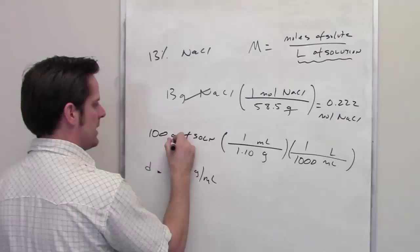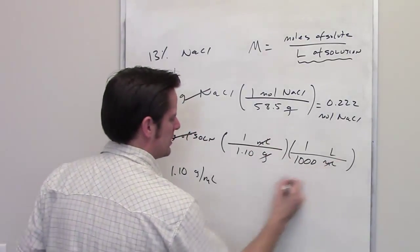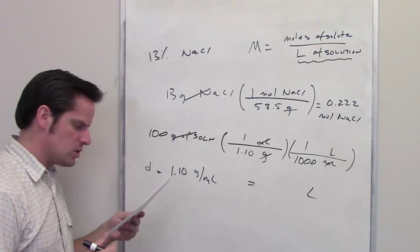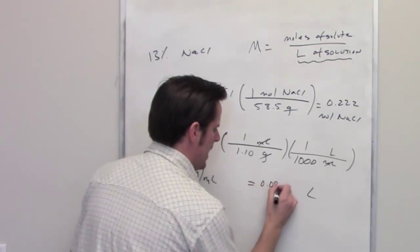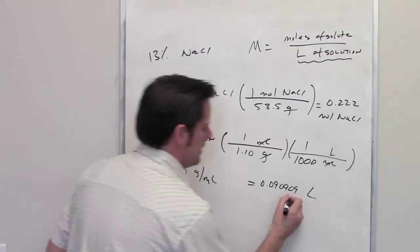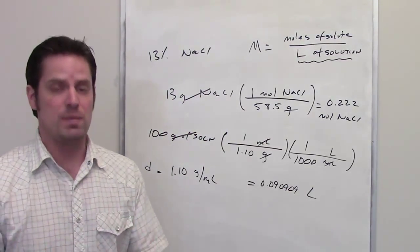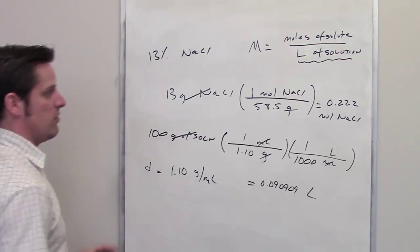One liter contains 1,000 milliliters. I can throw this into my calculator. Grams cancel, milliliters cancel. I'm left with a certain number of liters. That number comes to 0.09090. I'm not being very judicious about significant figures at this point; we'll do that in the final answer.